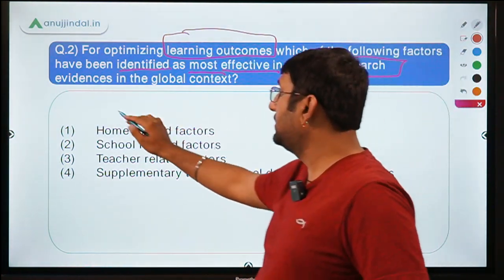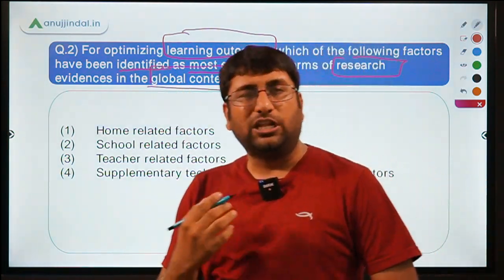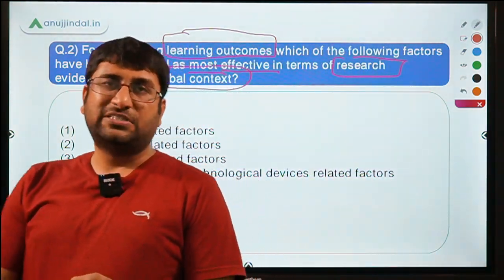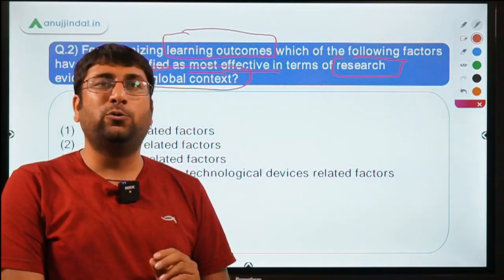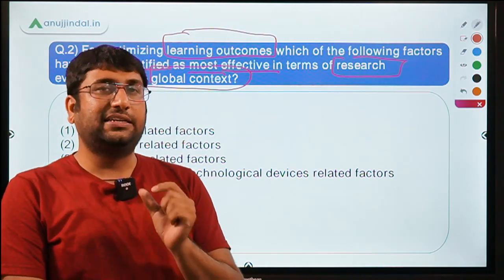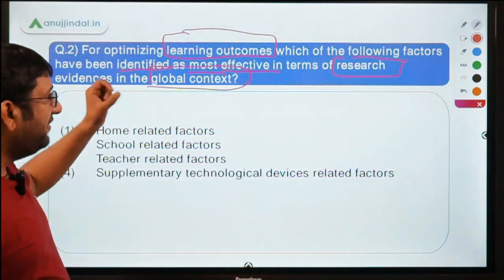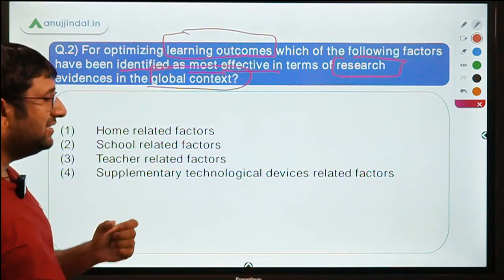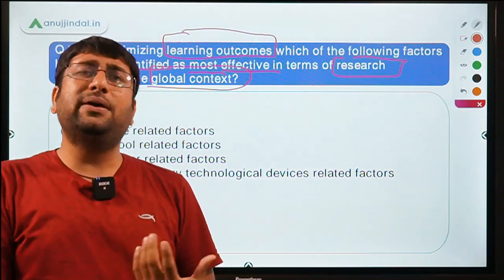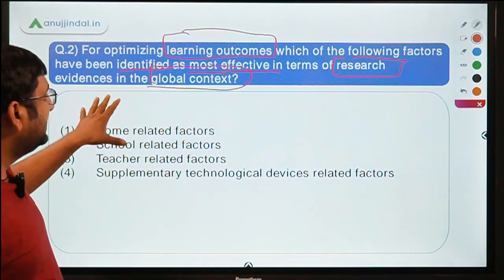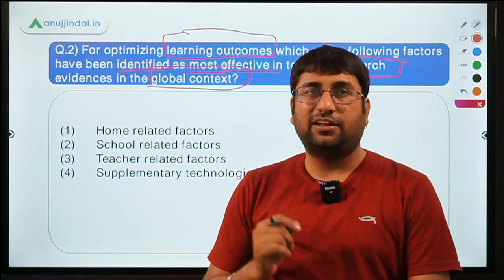Note the key terms: most effective factor, identified through research, at the global level. These small keywords are easy to miss if you read the question too quickly. So reading the question slowly and identifying all keywords is very important.